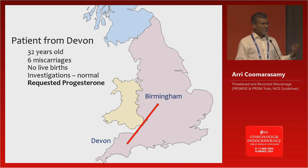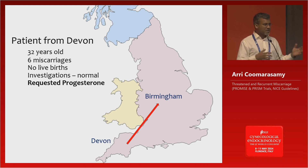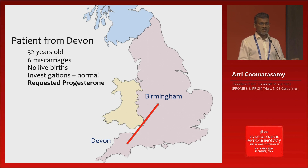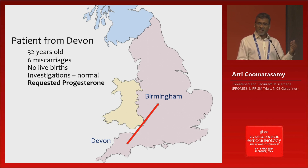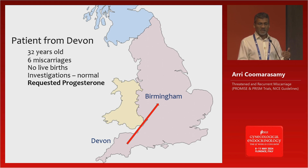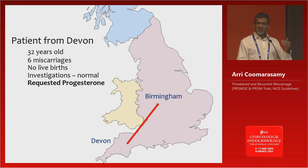She turned to me and asked, 'What about in someone like me?' — meaning someone who's had six miscarriages, not the average patient who's had two or three. I said it's unlikely. But when I finished the clinic, I did go back and thought, I need to look at the evidence here. So myself and a research associate decided to go back and look at the PROMIS data.